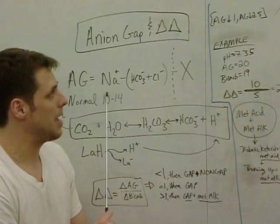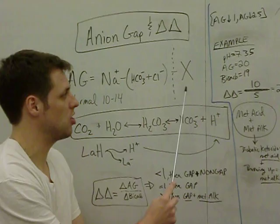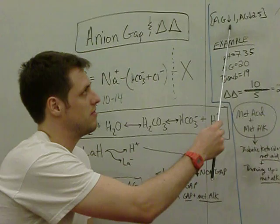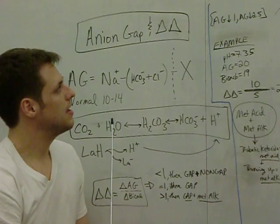Last point before leaving is, remember, when you're looking at anion gaps, I said normal is about 10, but because albumin contributes a great deal to this unknown factor we're actually measuring with anion gap, if albumin levels are down, then anion gap is artificially down.